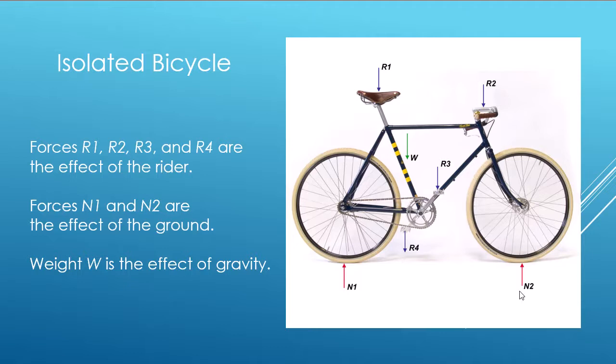N1 and N2 must balance all these downward forces, R1 plus R2 plus W plus R3 plus R4. So, this is the Free Body Diagram for the entire bicycle.